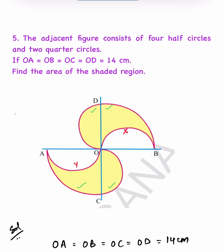It is given that OA, OB, OC and OD are all equal and they are equal to 14 cm. That means whether the quarter circles are taken or semi-circles are taken, for all of them the radii are equal. Because all of them have the same radius, R is the same for all quarter circles and half circles.